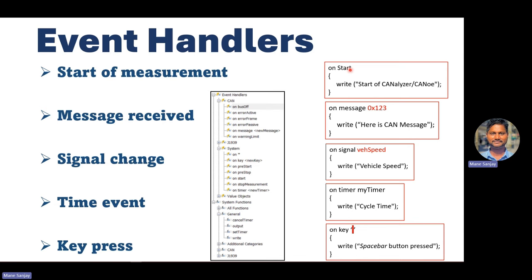When I say 'start of measurement', as soon as you start your measurement, whatever event you want to execute, you write it inside the 'on start' event. 'On message' is used to receive or process a specific message by its identifier. 'On signal' is used when you want to work on signals. 'On timer' defines the timer. 'On key' — if you put nothing, it responds to the space bar from the keyboard.